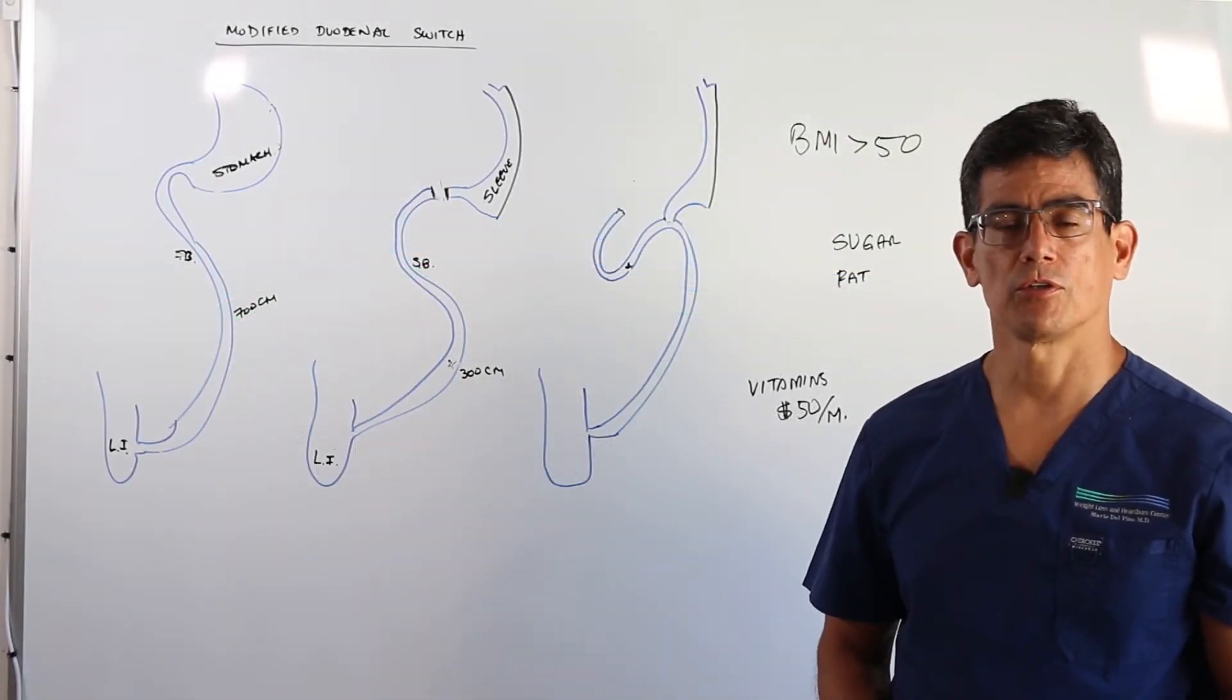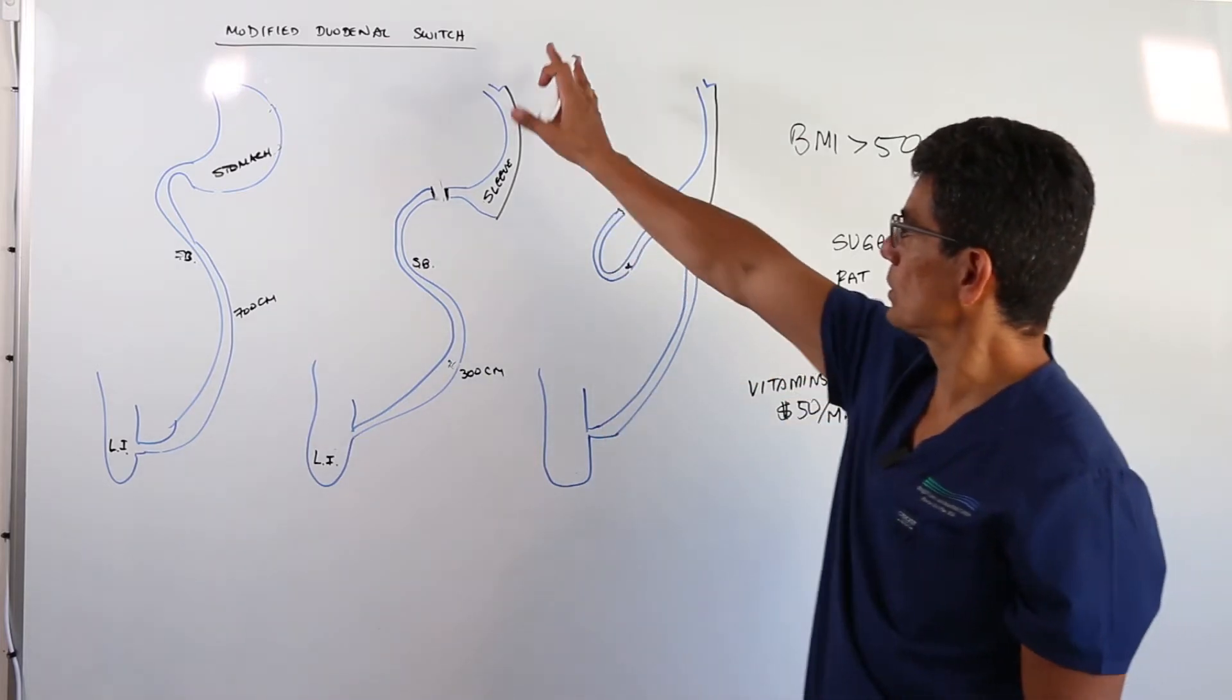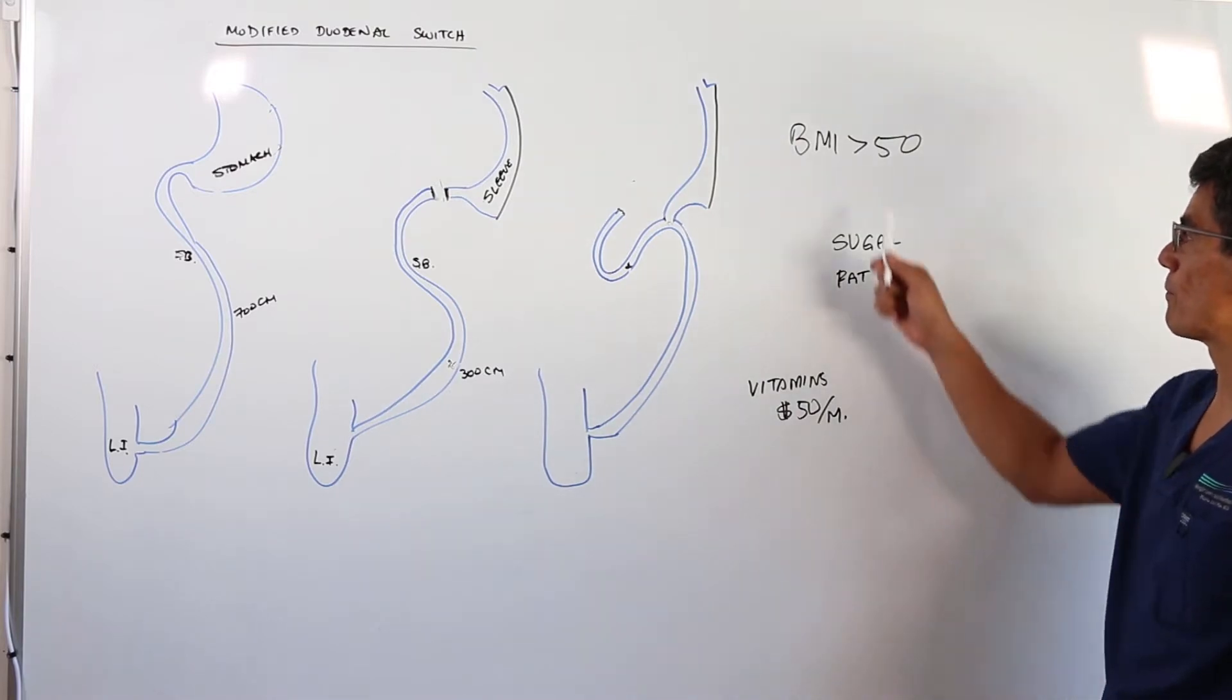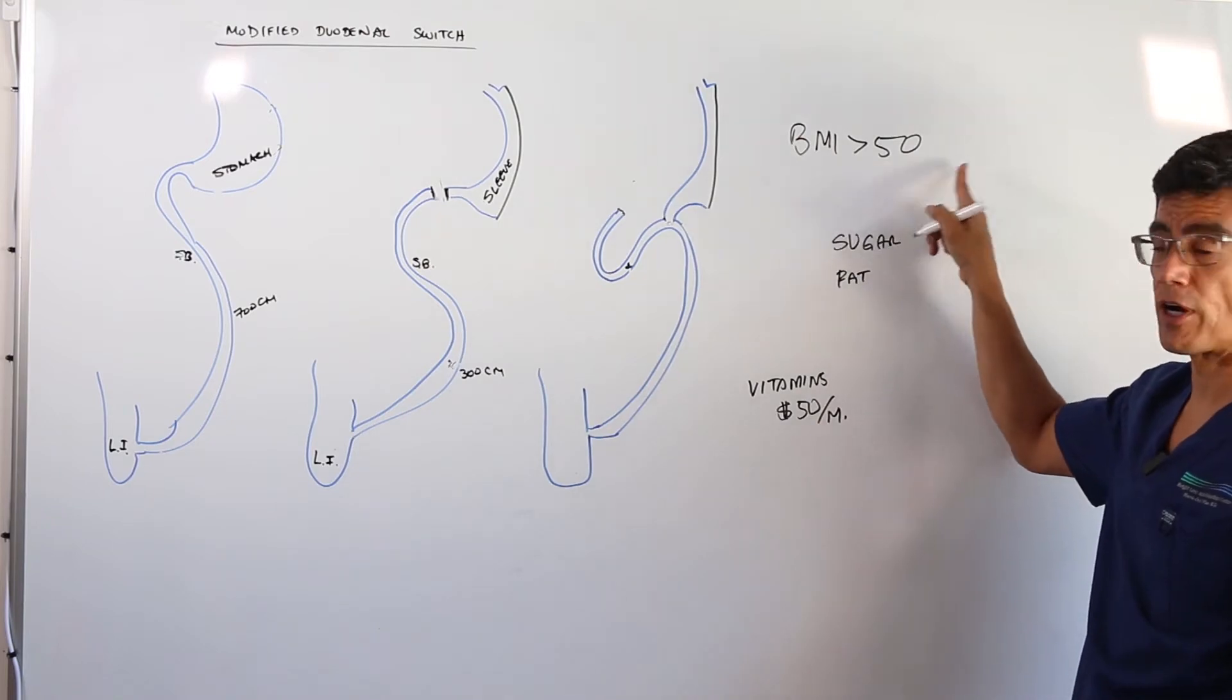I'm Dr. Alpina and I'm going to talk to you a little bit about the modified duodenal switch. The modified duodenal switch is a surgery that is indicated for patients who are on the heavier side, who have a BMI of around 50 or higher.